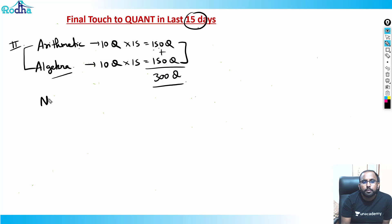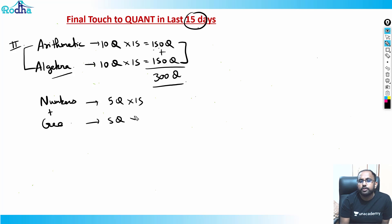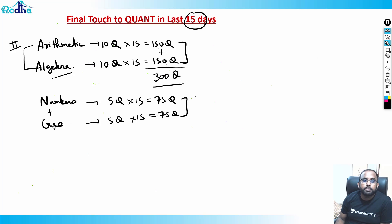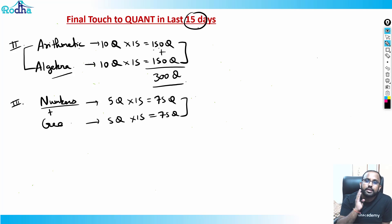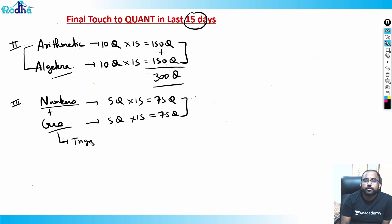The second area is numbers plus geometry. Try to solve at least five questions each from these topics daily — that's 75 questions each over 15 days. For numbers, cover HCF, LCM, factors, factorials — touch everything. For geometry, cover coordinate geometry, a few trigonometry questions, triangles, circles, and polygons — try to touch everything.